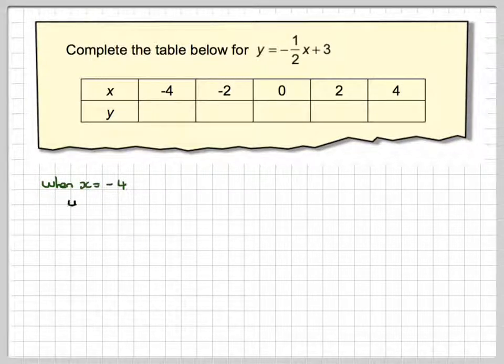When x is equal to minus 4, we're going to have y equals minus one-half times x, which is now minus 4, plus 3. Minus one-half times minus 4, and a half of 4 is 2, and a minus times a minus is positive. So that will become 2 plus 3, which is 5.